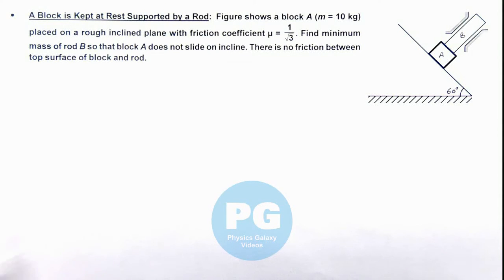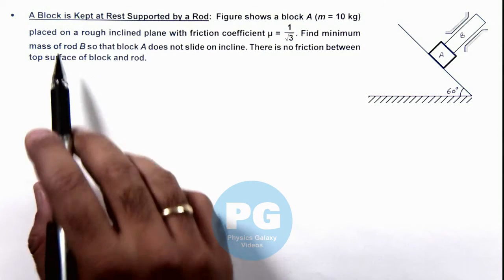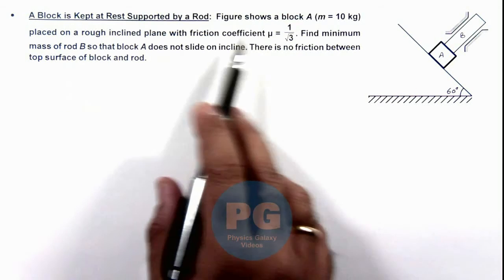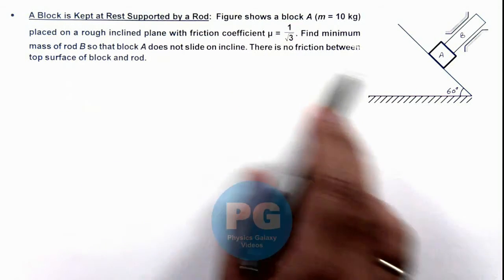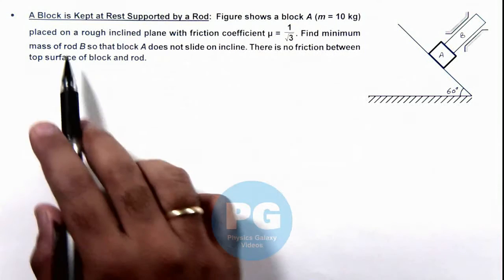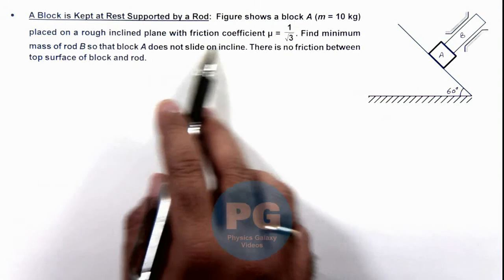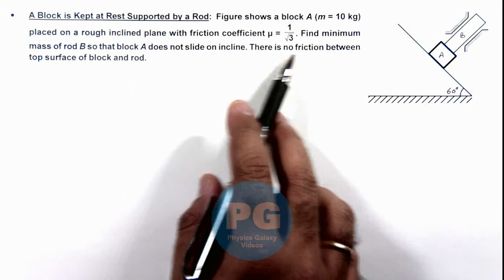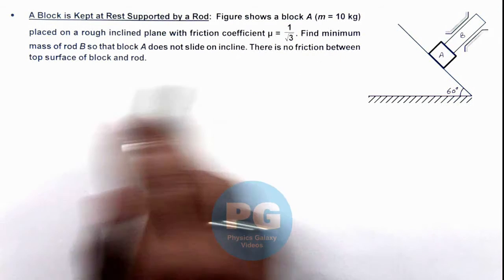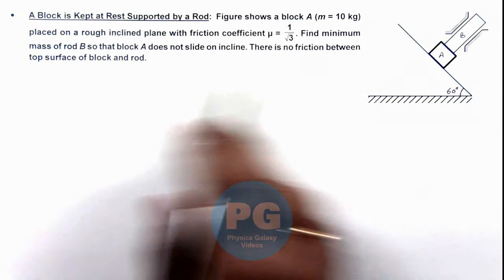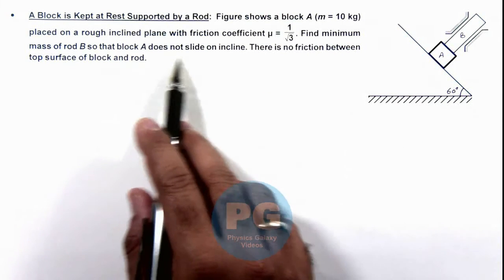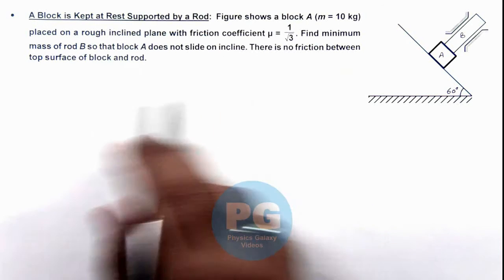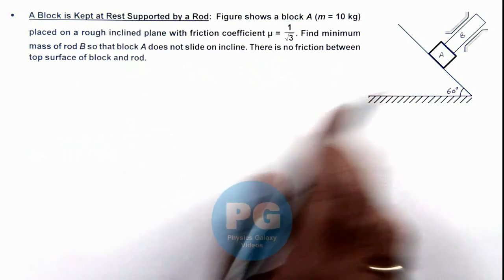This illustration is about a block kept at rest supported by a rod. The figure shows block A, which has a mass of 10 kilograms, placed on a rough inclined plane with friction coefficient 1 by root 3. We are required to find the minimum mass of rod B so that block A does not slide on the incline. There is no friction between the top surface of block A and the rod.